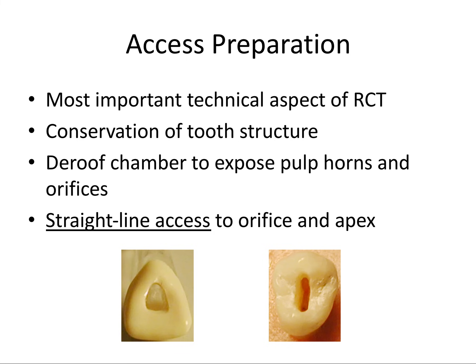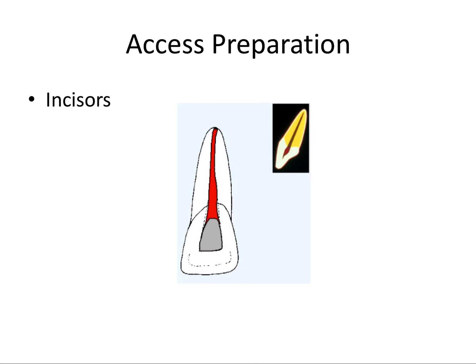So let's talk briefly about the different types of access preps depending on what tooth you're working on. The detailed measurements of each prep are outside the scope of this video since I'm only highlighting information most pertinent for the Part 2 board exam. The incisor preps are triangular, which serves several functions.